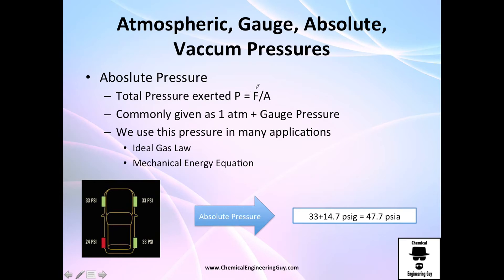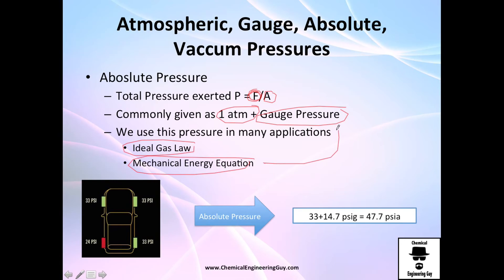The total pressure exerted is the sum of all forces per unit area: one atmosphere plus the gauge pressure equals absolute pressure. When using the ideal gas law or the mechanical energy equation, you must be consistent — either use gauge pressure in every term, or use absolute pressure in every term. If you use absolute pressure at point A, you must use absolute pressure at point B.